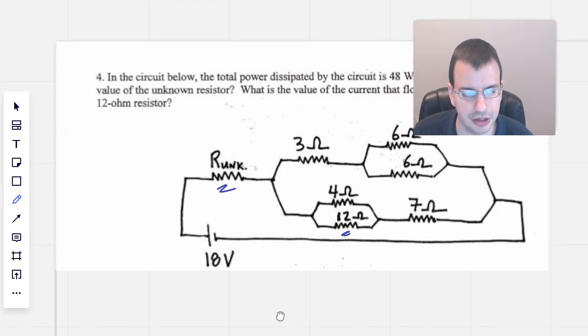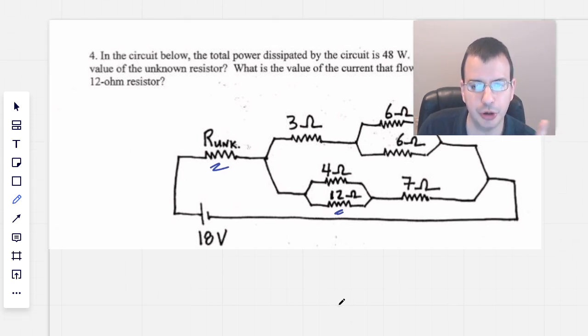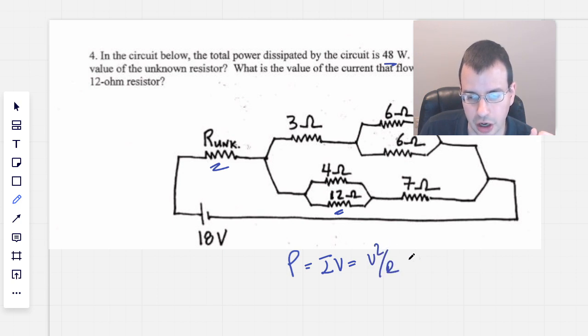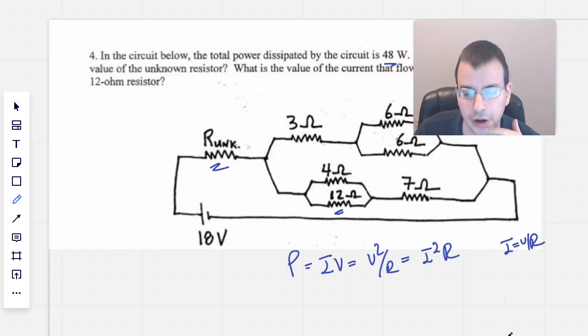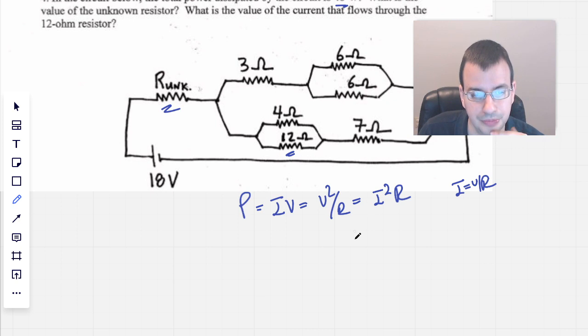The first thing we're going to do is look at this 48 watts. We know that power equals IV, which is the same as V squared over R, which is I squared R. We can use these to find what the total resistance should be. You can convert between these through Ohm's law, where I equals V over R, or V equals IR.